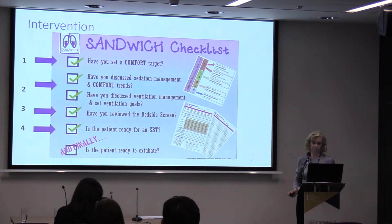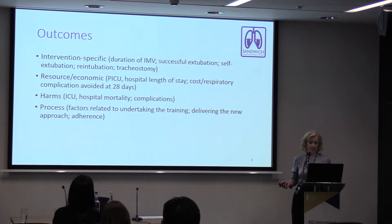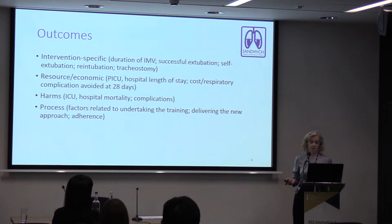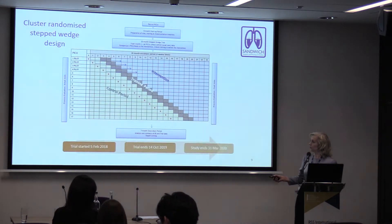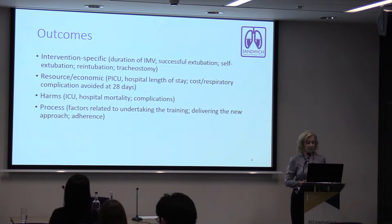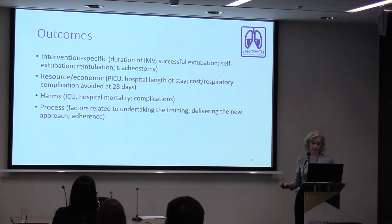The outcomes we're measuring fall into four categories. Intervention-specific outcomes include our primary outcome — duration of mechanical ventilation — plus extubation success, self-extubation, and other clinical outcomes. We're also looking at resource and economic outcomes, harms including ICU and hospital mortality, and complications. Importantly, we're also measuring process factors related to training delivery, adherence to the approach, and whether staff adopt the practice change.